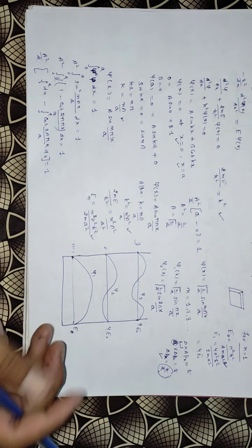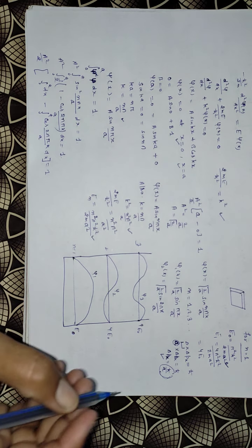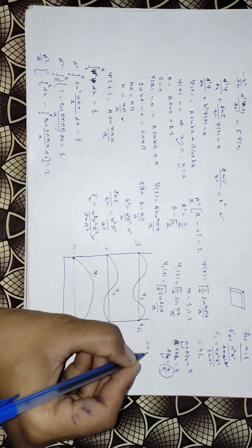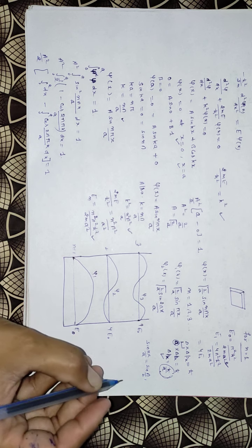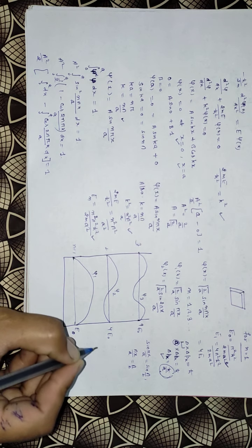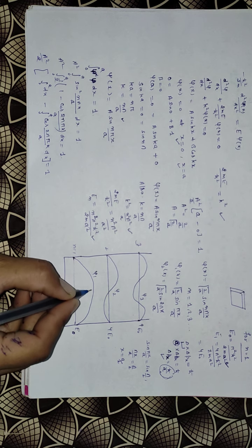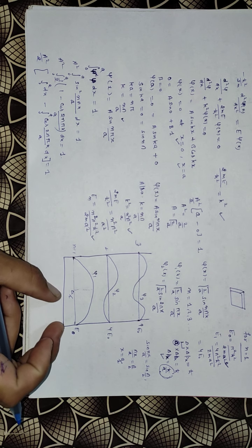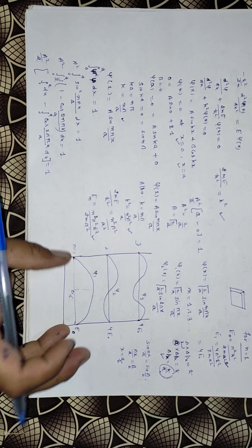For the first wave function ψ₁ = √(2/A)·sin(πx/A), the maximum value of sin is 1, which occurs when πx/A = π/2, giving x = A/2. So at the midpoint of the box, the wave function is maximum and the probability of finding the particle is maximum.